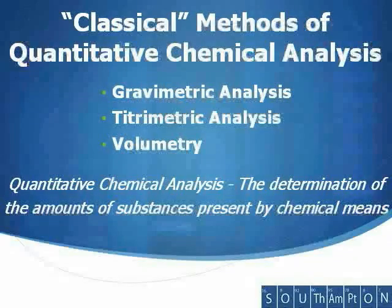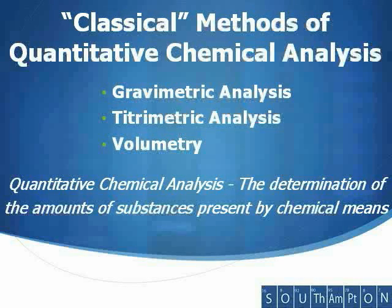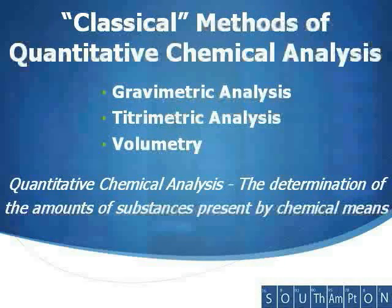A quantitative chemical analysis is one where the amount of substance present is determined by chemical means. The three classical methods of quantitative chemical analysis are gravimetric analysis, titrometric analysis, and volumetry. Volumetry is where the volume of gas evolved or absorbed in the chemical reaction is measured.